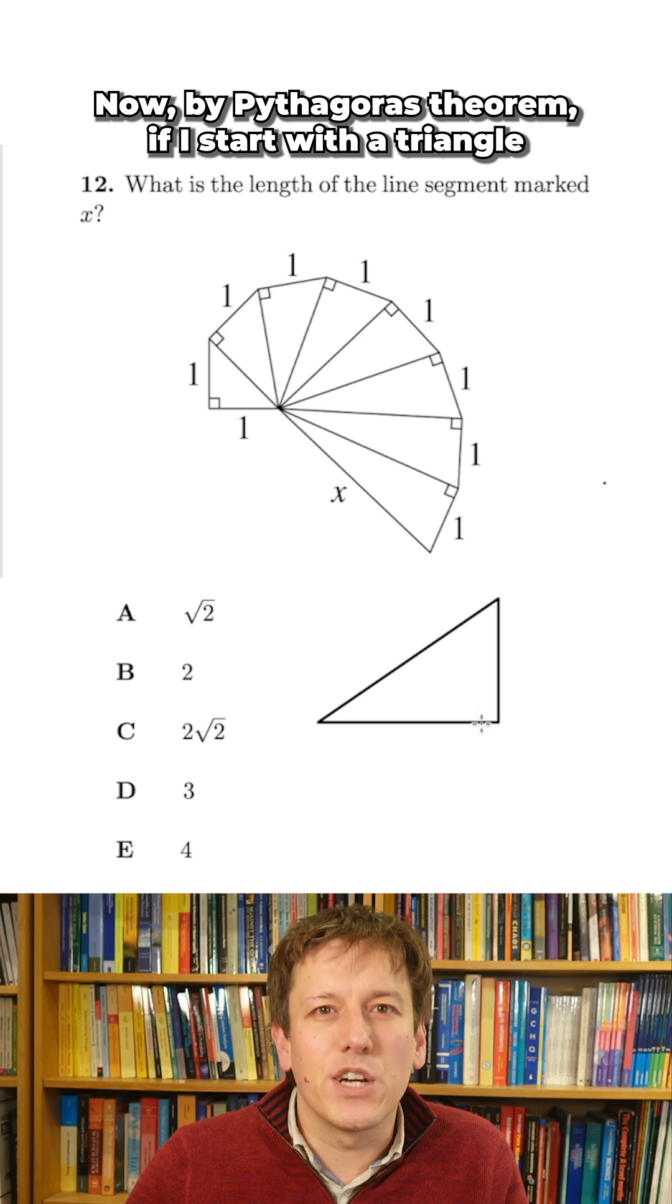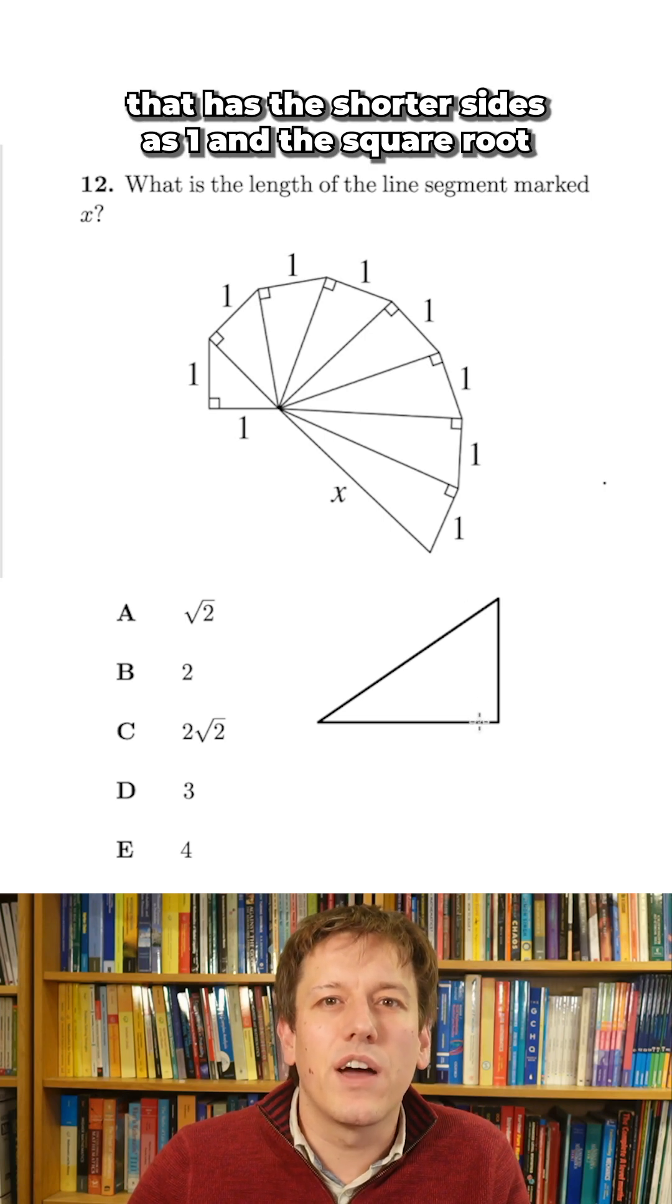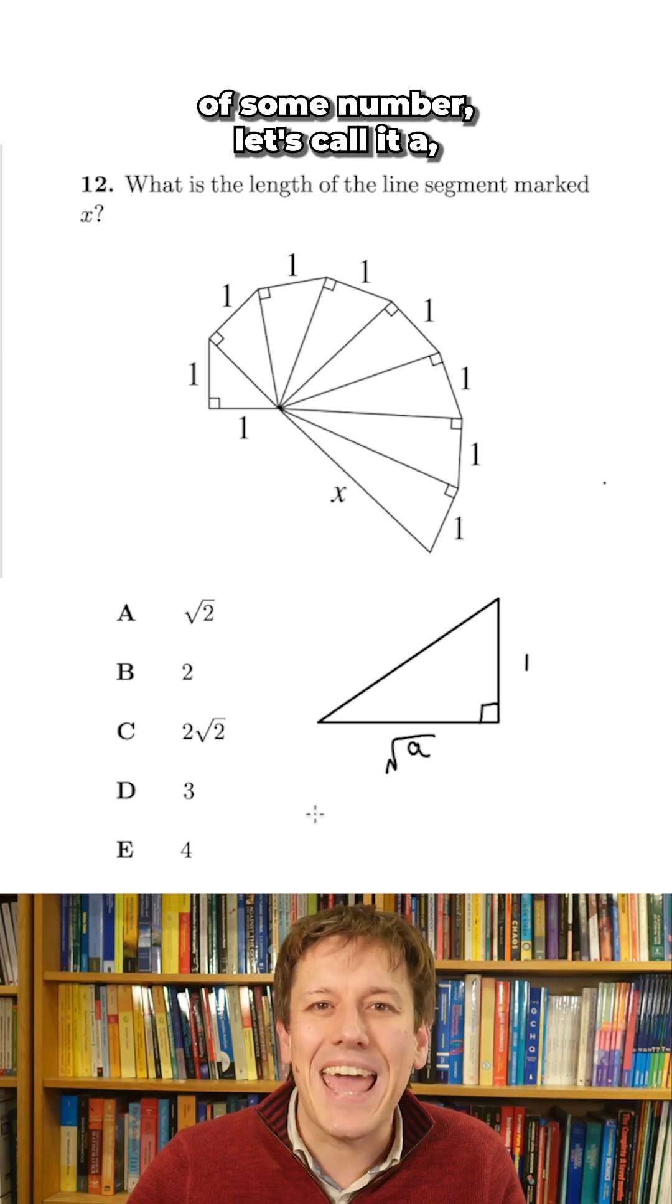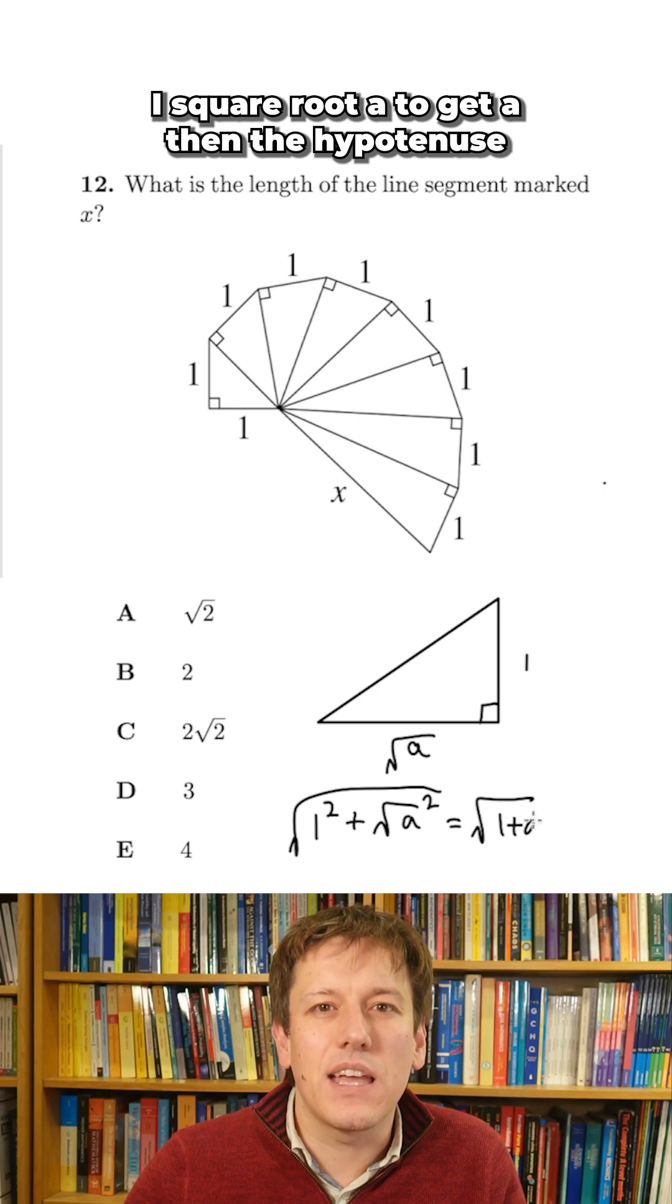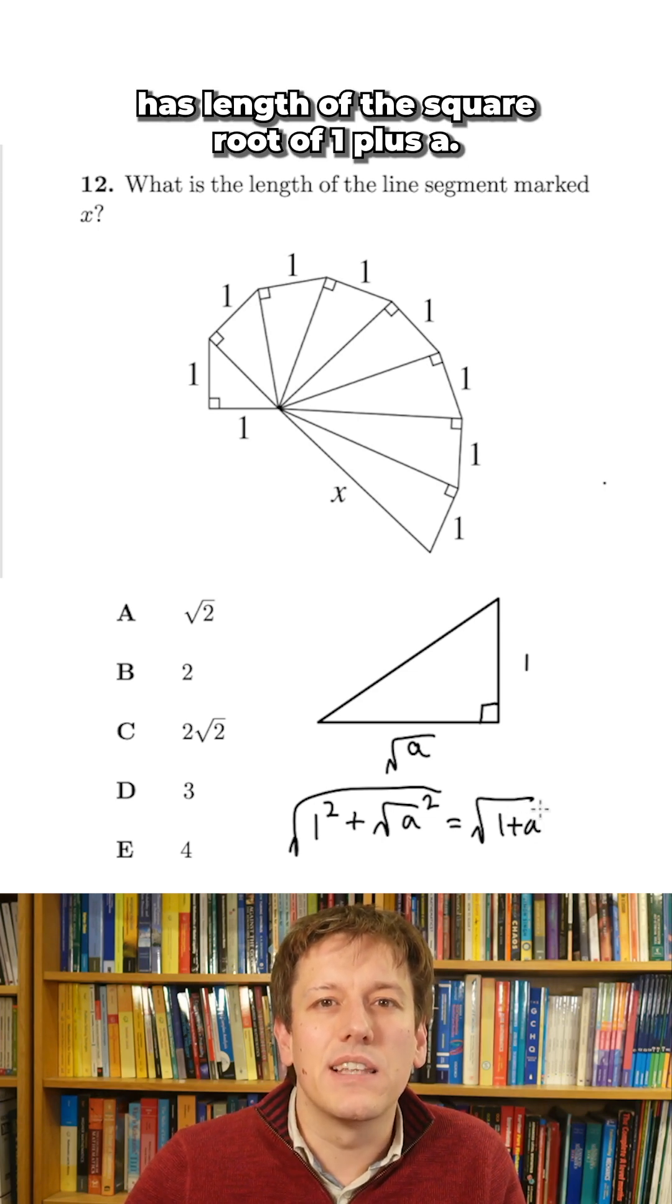Now by Pythagoras theorem, if I start with a triangle that has the shorter sides as 1 and the square root of some number, let's call it a, then the hypotenuse—I square 1 to get 1, I square root a to get a, then the hypotenuse has length the square root of 1 plus a.